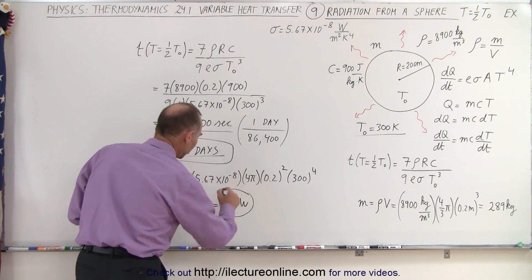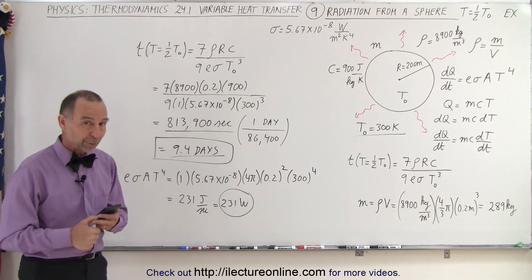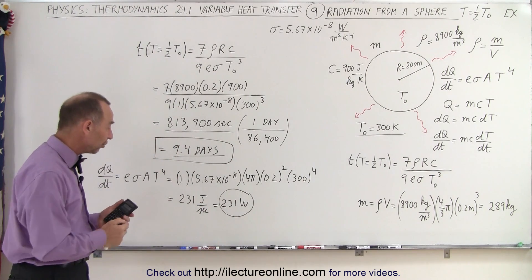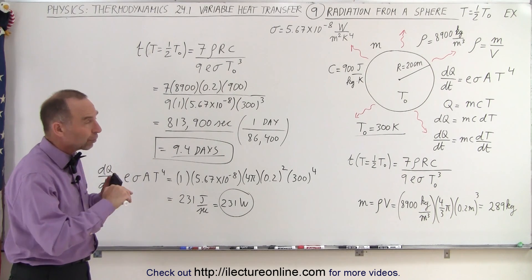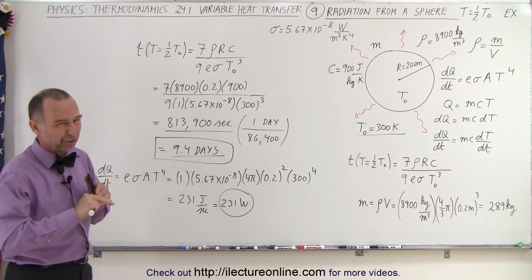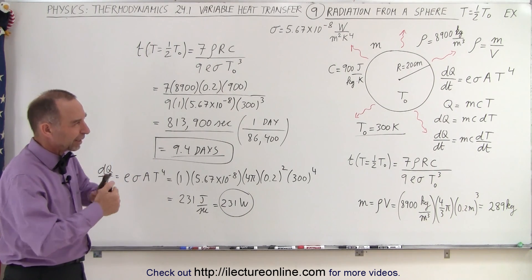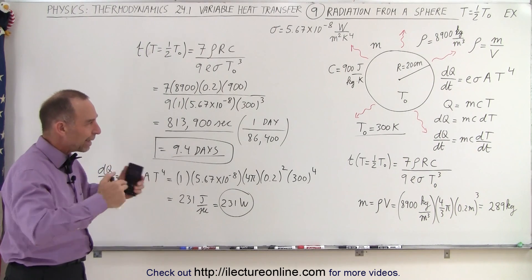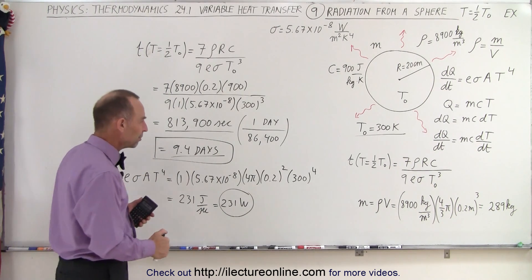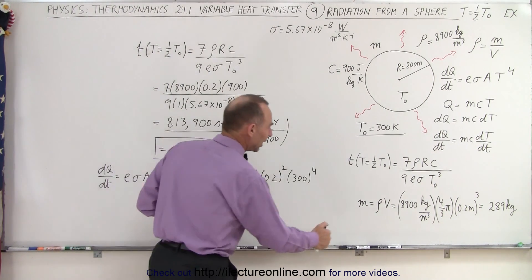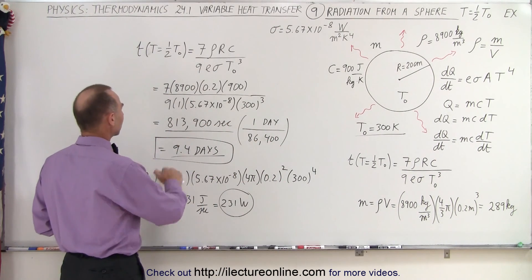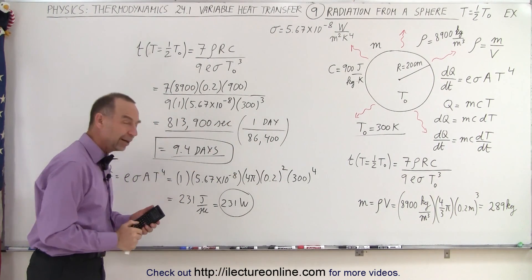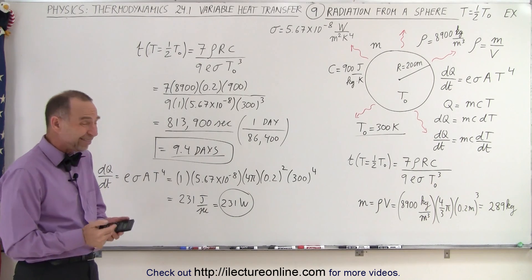So at its original temperature of 300 kelvin, a metal sphere placed out in space would be radiating at 231 watts. Of course, that metal sphere would probably have to be painted black or something like that, because you want maximum emissivity — you want to emanate at the maximum emissivity rate of E equals 1. And yes, we use E equals 1 right there.